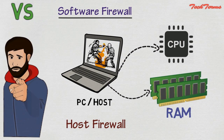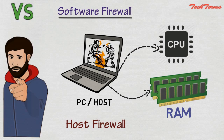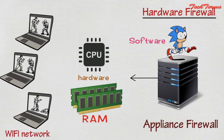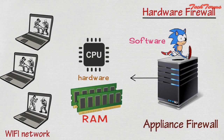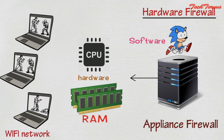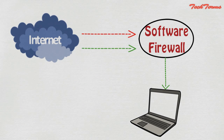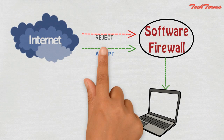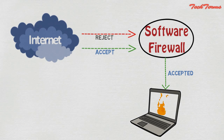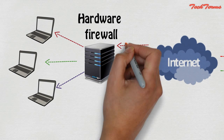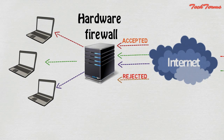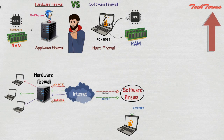A software firewall can protect only that computer in which it is installed, while a hardware firewall can protect all the computers that are present in a network. Software firewall filters the traffic of one computer only, whereas a hardware firewall filters the entire traffic of the network.